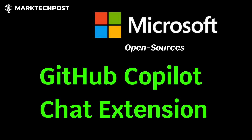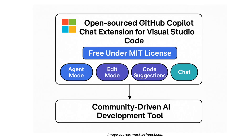Microsoft has officially open-sourced the GitHub Copilot chat extension for Visual Studio Code, making it fully available for free under the MIT license. Previously part of the paid GitHub Copilot subscription, this move allows developers unrestricted access to advanced AI-powered coding tools without paying a dime.